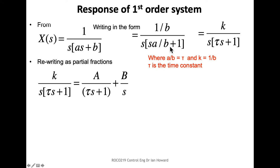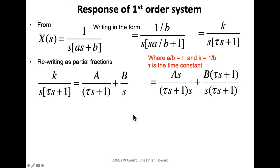Now we do partial fraction expansion. Looking at the denominator s(tau*s + 1), we have one term of the form A/s and another of the form B/(tau*s + 1). To find A and B, we equate coefficients — to do that we need a common denominator.